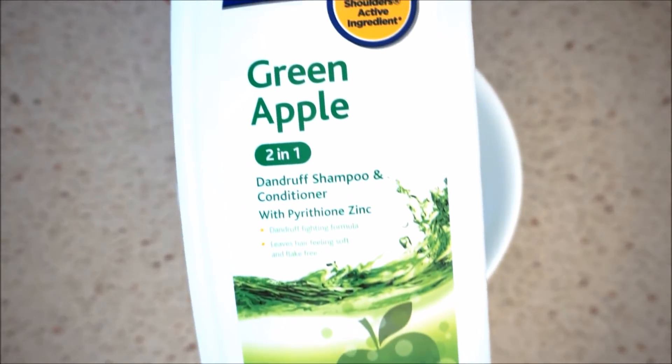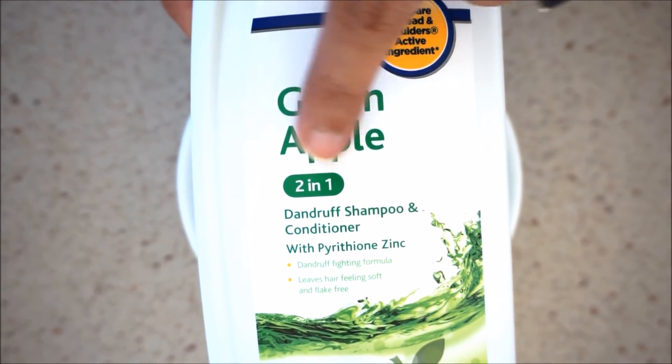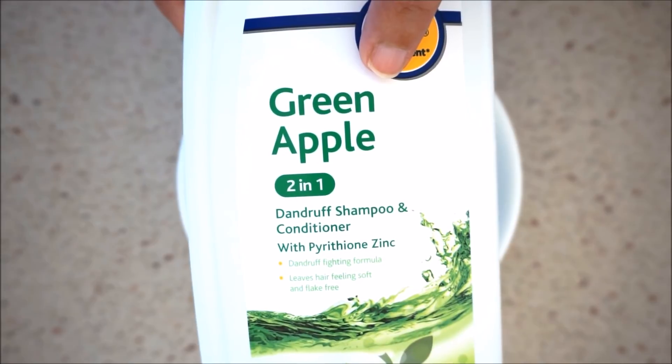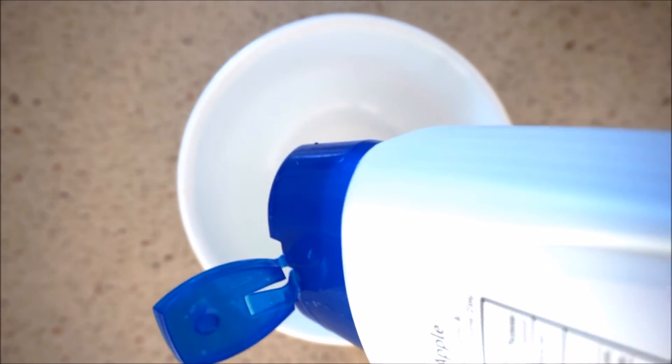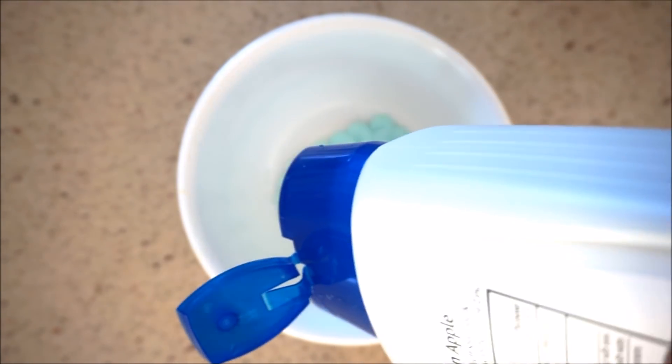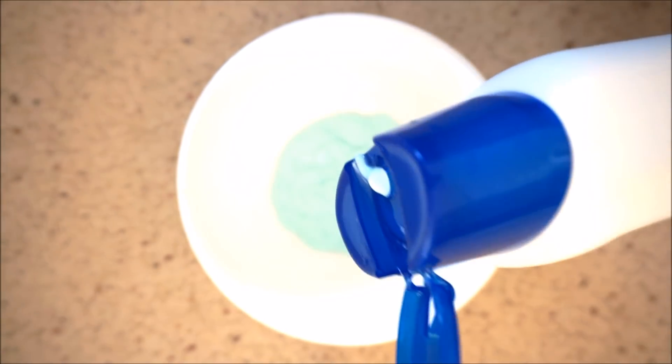For this, use a shampoo that has both shampoo and conditioner, so it's a combination shampoo. Use two teaspoons of shampoo. This remedy is for two teaspoons of shampoo. If you use more shampoo, then you can adjust the ratio accordingly.